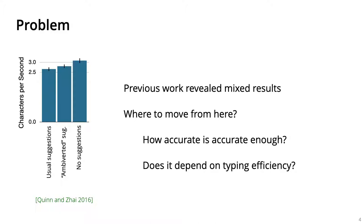Previous works even showed that they can in fact slow down users. But where do we move from here? Does this mean suggestions are not accurate enough? How accurate do they need to be?